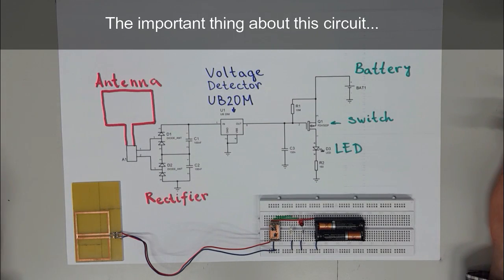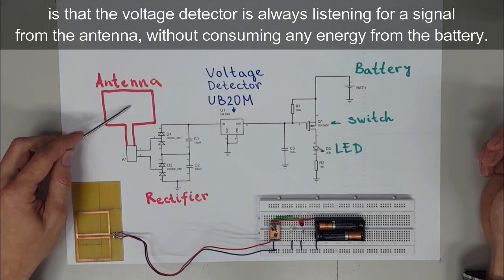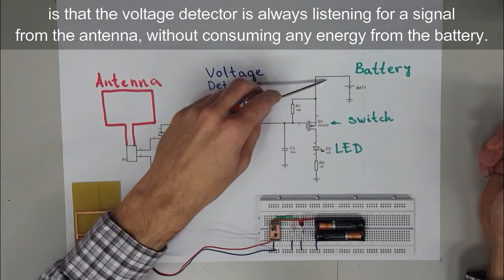The important thing about this circuit is that the voltage detector is always listening for a signal from the antenna without consuming any energy from the battery.